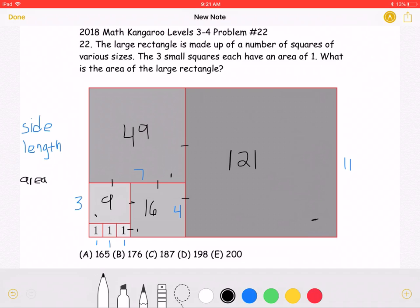So we have 3 areas of 1 plus 9 plus 16 plus 49 plus 121. This is also equal to 198.